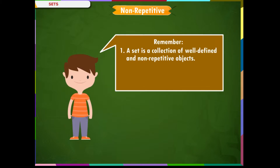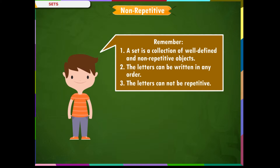Remember: 1. A set is a collection of well-defined and non-repetitive objects. 2. The letters can be written in any order. 3. The letters cannot be repetitive.